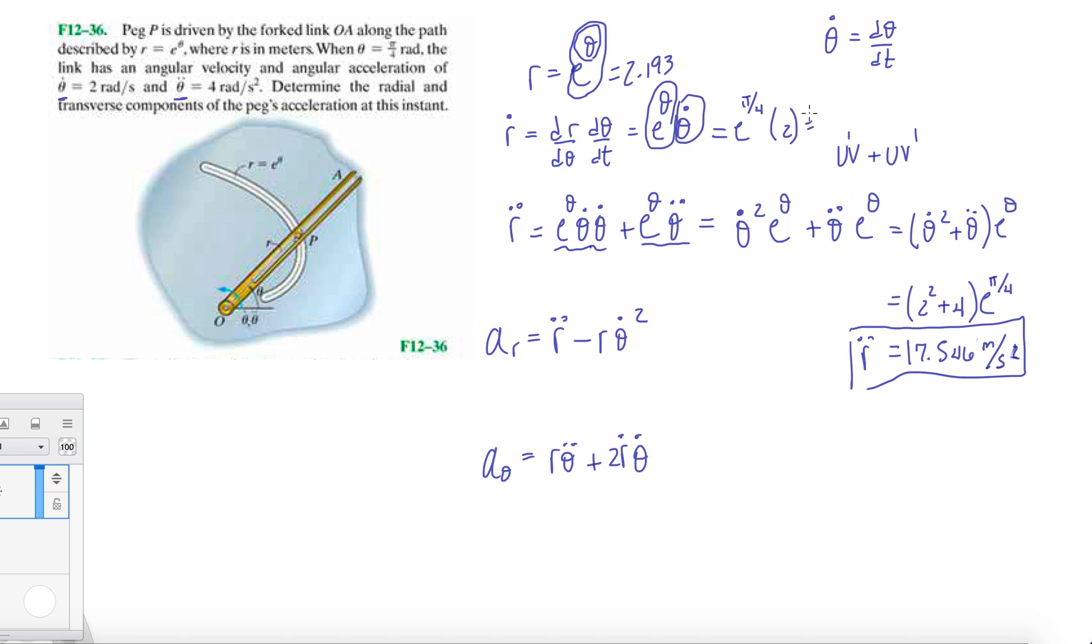R dot is 4.387 meters per second when you plug in everything. And r is 2.193. So we have everything, and it was pretty easy, just a few derivatives. The hardest part is probably just keeping this organized. Now plug everything in.